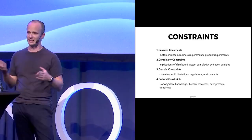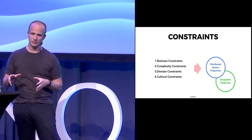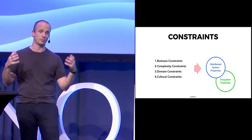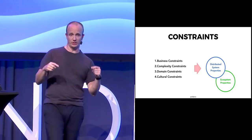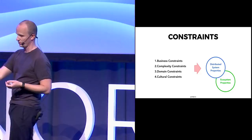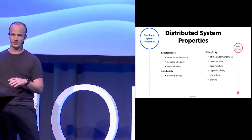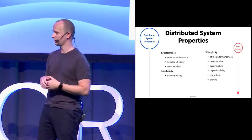What is important is that these constraints imply some properties of the distributed system — of the product you are building. It's not just the distributed system, but there is a broader ecosystem around it. So what are these properties? If you apply certain constraints, you might get certain properties. Let's go through some of the properties of a distributed system that you might get based on what constraints you select.